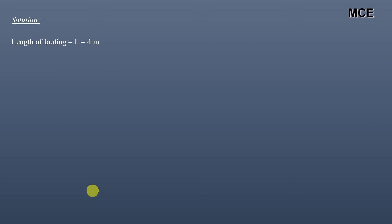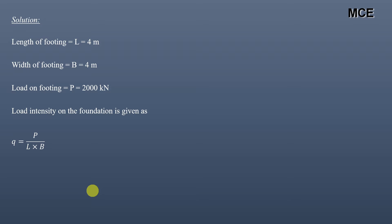The length and width of the footing are both 4 meters, making it a square footing. The load on the footing is 2,000 kN. Therefore, the load intensity on the foundation is 2,000 divided by 4 × 4, which equals 125 kPa. This is the load intensity on the foundation.